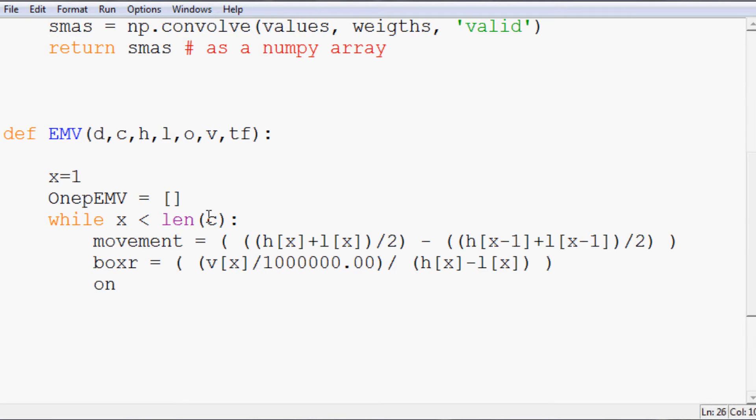Now, what we want to do is we want to say 1p emvs. So, 1p emv equals, now, movement divided by this boxr. Since that's really what the equation is trying to do. It's trying to divide this whole thing by this whole thing. Now, just so we can decide whether or not we're happy with that number, let's go ahead and just print that out. So, we can just see it with our eyeballs and see if that looks legitimate. So if this is printing out like a 15 billion every time or something, we know that something is wrong. Then, we're going to do x plus equals 1.